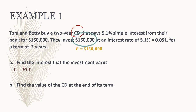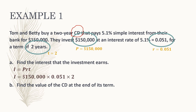So P is $150,000 — that's the principal, how much they originally invested. Our interest rate R is 0.051, and our term T is two years. Plugging these in: I equals $150,000 times 0.051 times 2. Multiplying those together gives us $15,300.